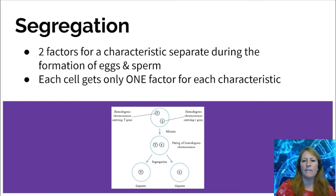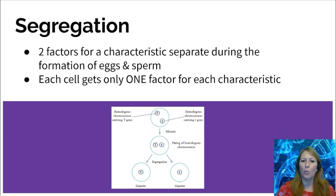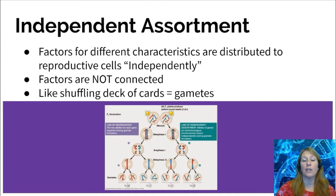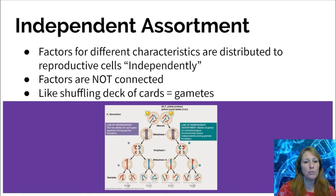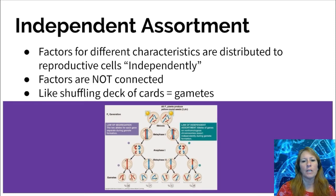The second law is the law of segregation, which relates back to meiosis. When you go through meiosis I and meiosis II to produce four eggs or four sperm, each egg or sperm will receive a different characteristic or trait — this happens randomly. This leads to the third law, independent assortment, which means that traits are not necessarily connected to one another.